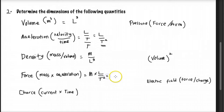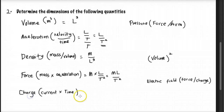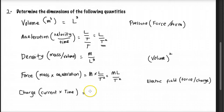Next is charge, which is current times time. The symbol for current is I, so charge has dimension I times T, written as IT.